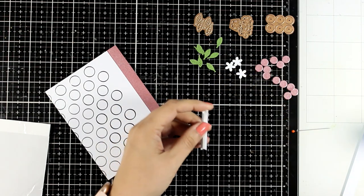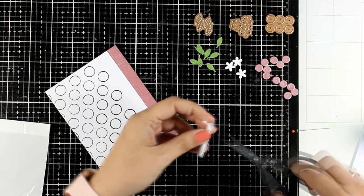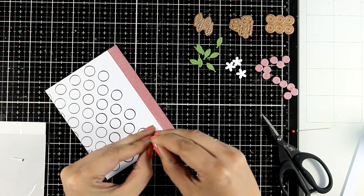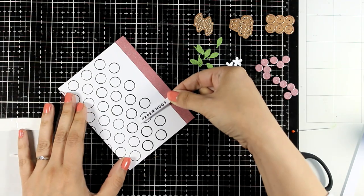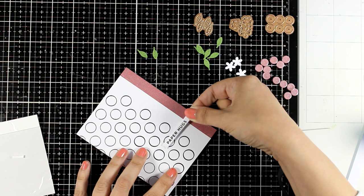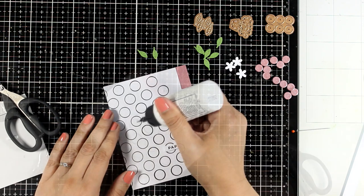There are many sentimental plates included in the glimmer set this month and I did use one of them that says paper hugs. You can also have a complete phrase that says sending paper hugs your way I believe. However, I'm just going to use one of the phrases here.